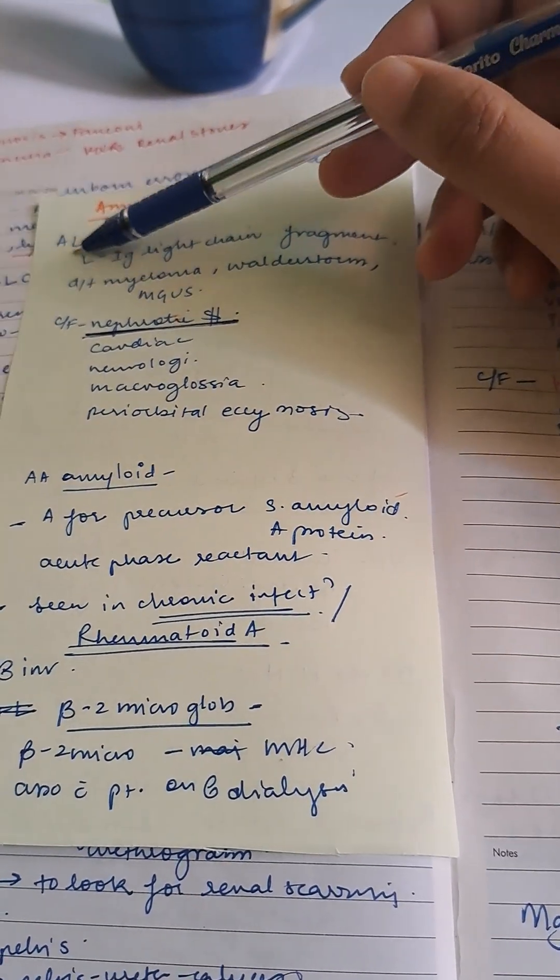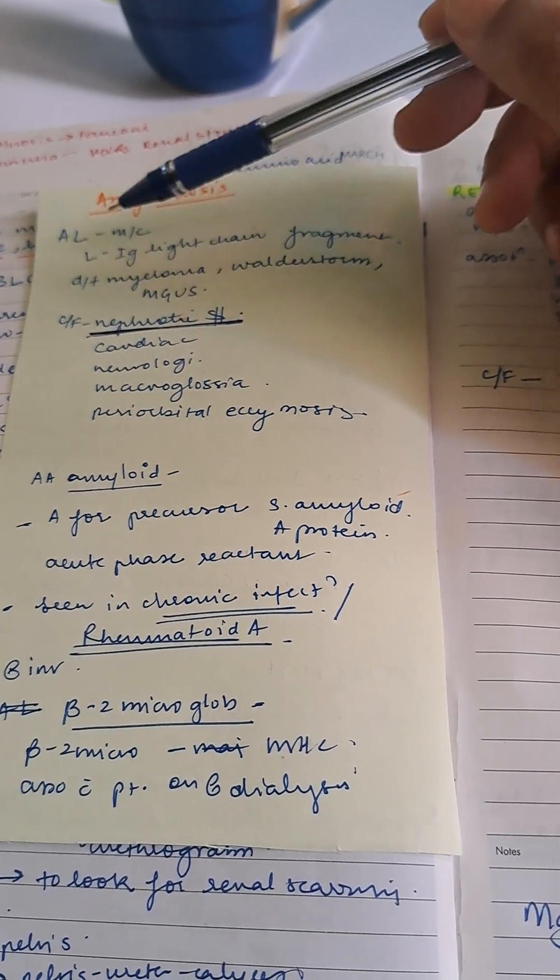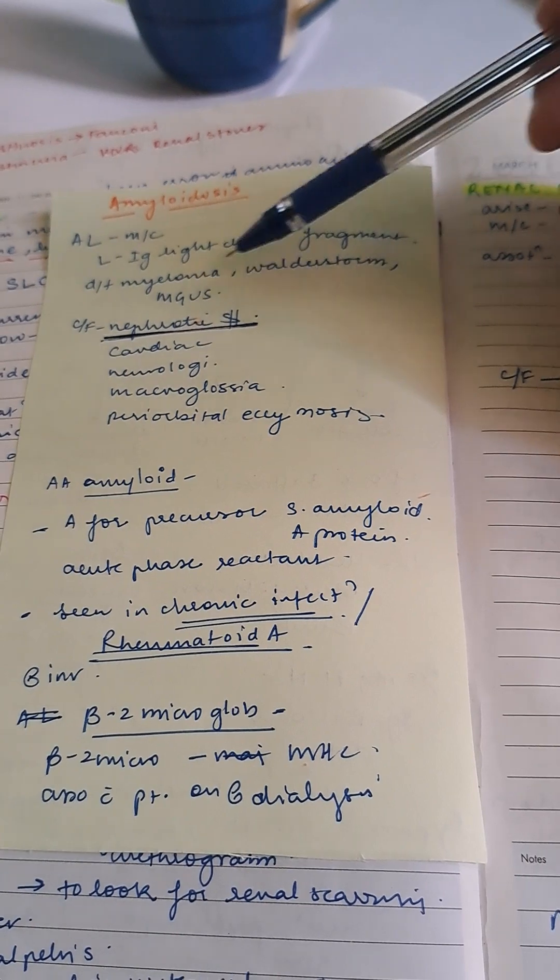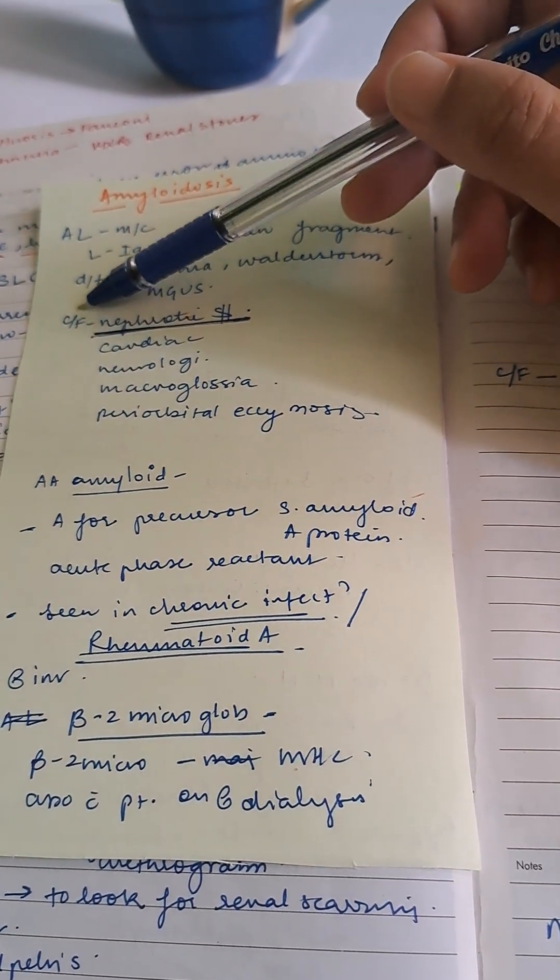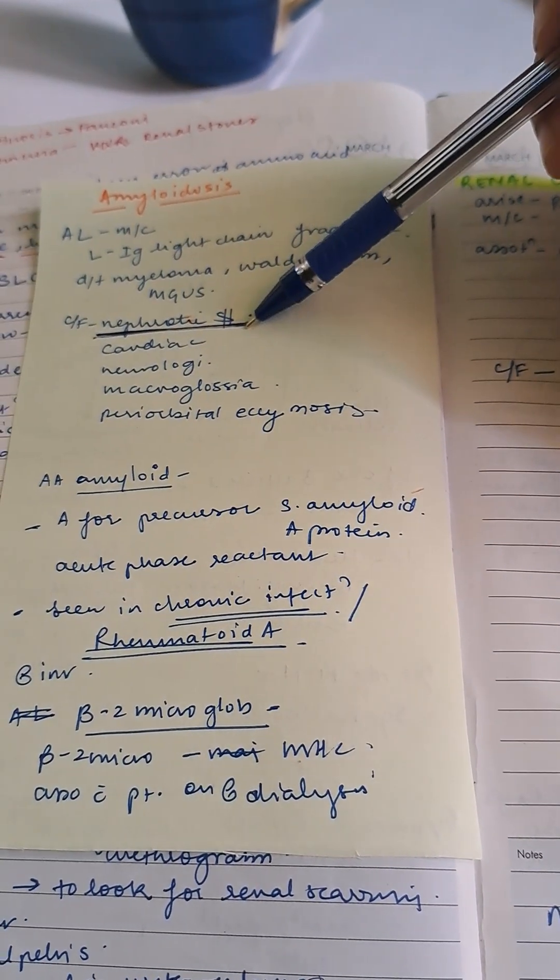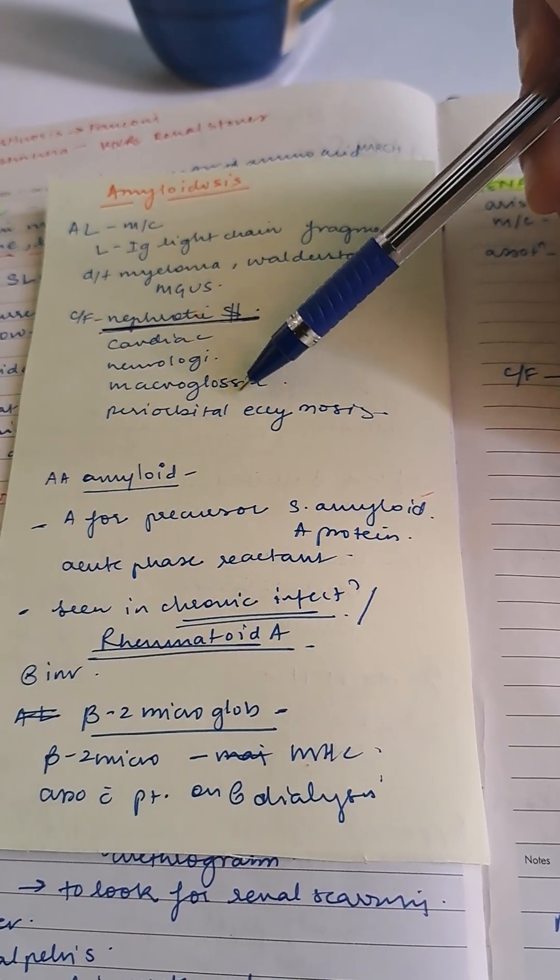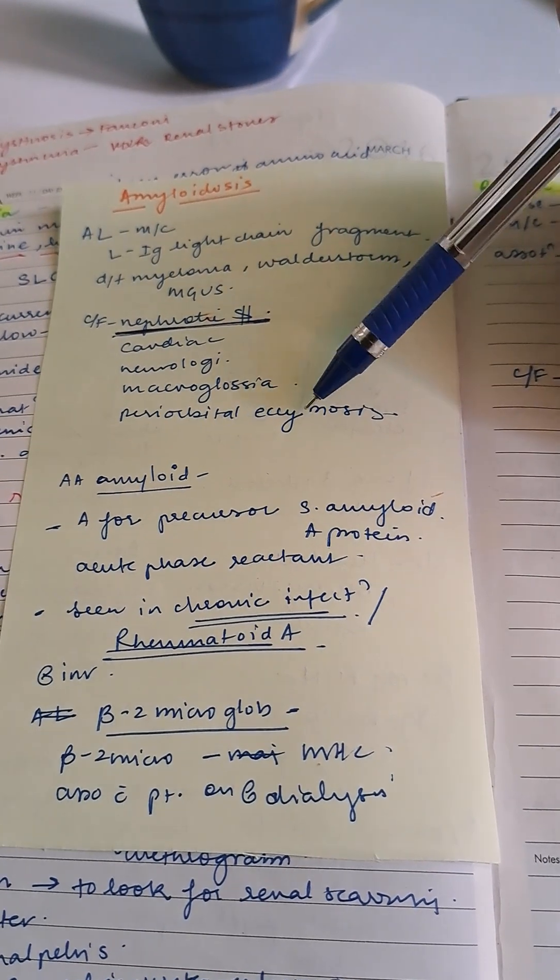Amyloidosis AL type is the most common. L is for immunoglobulin light chain fragment, due to myeloma, Waldenstrom, or MGUS. Clinical features: the most common is nephrotic syndrome, followed by cardiac, neurologic, macroglossia, and periorbital ecchymosis.